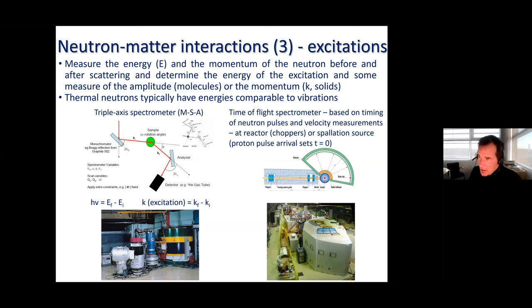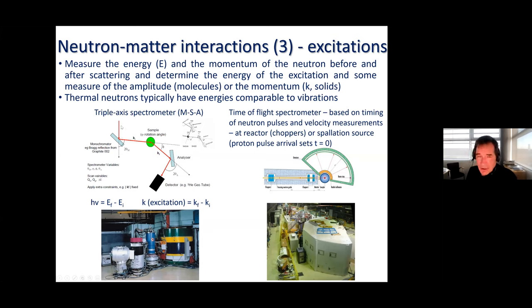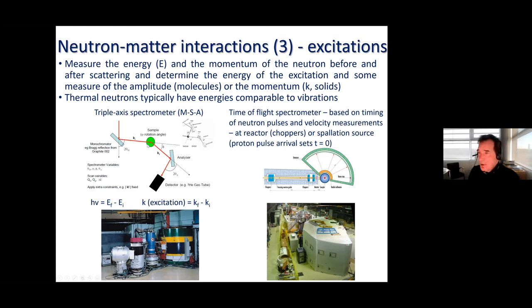We can measure energy and momentum transfer using one of two types of spectrometer. The traditional approach is the triple-axis spectrometer: the neutron beam comes in from the reactor, is scattered off a crystal of known d-spacing at a measurable angle, and the wavelength is determined from the Bragg relation. Neutrons of a selected energy are scattered from the monochromator onto the sample, with known energy and momentum defined by this part of the vector triangle.